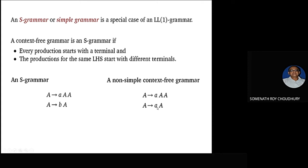Our context-free grammar should have a rule where the same terminal should not appear in two rules — this is called removing left recursion, which we can do. That is the negative point of top-down parsing. We should have one and only one terminal to determine which rule to fire. There is a very good technique called First and Follow. The First of a variable — say capital A — is the set of terminals with which strings derived from A can begin.